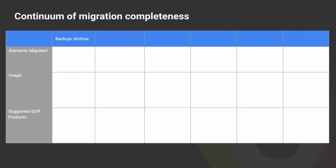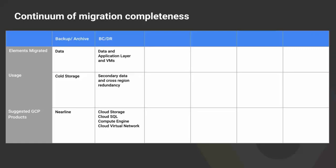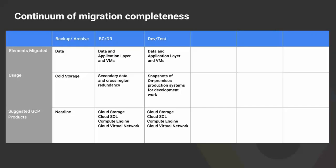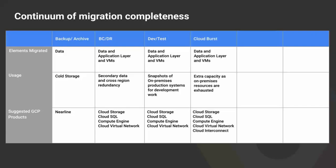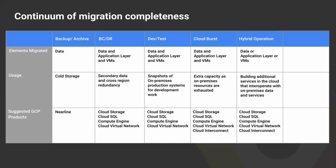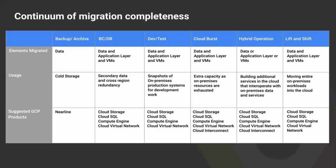There's a continuum of migration completeness in terms of how fully one has moved their systems into the cloud. The first is backup or archive, where one just uses the cloud for cold storage, typically using a product like Nearline. The second is business continuity disaster recovery, where a secondary dataset is created in the cloud. The third is development and test, creating a production environment in the cloud for developers. Then there's Cloudburst, using the cloud as additional capacity. Then hybrid operation, where the cloud is used cooperatively with on-premises. And finally, lift and shift, where one moves the entire application and virtual machine into the cloud.